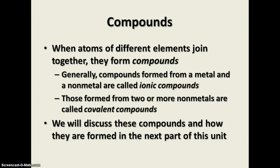When atoms of different elements join together, they form compounds. Generally, compounds formed from a metal and a nonmetal are called ionic compounds. An example of this is sodium chloride or salt. Sodium is a metal, chlorine is a nonmetal, and that forms an ionic compound. Those formed from two or more nonmetals are called covalent compounds. And we're going to talk a lot more about these compounds and how they form in the next part of the unit.